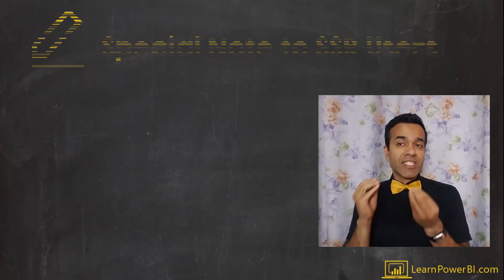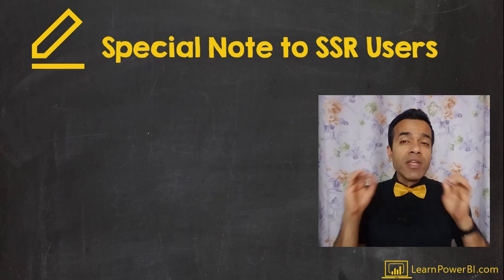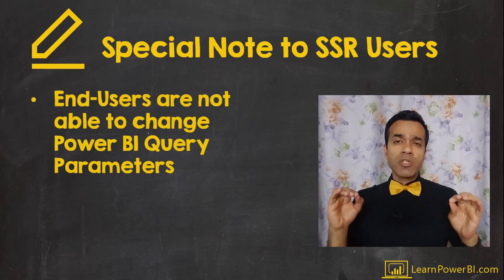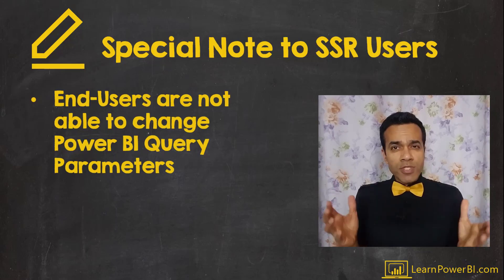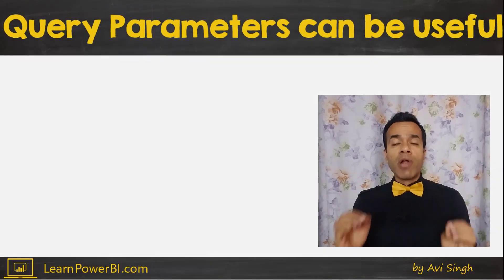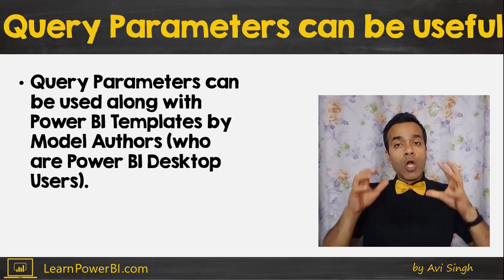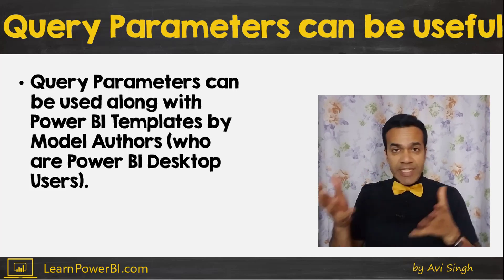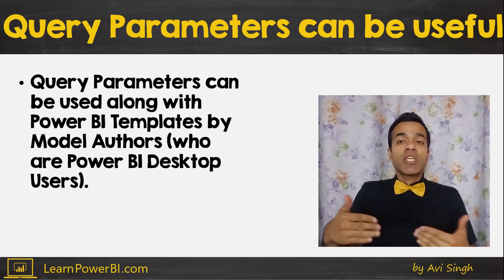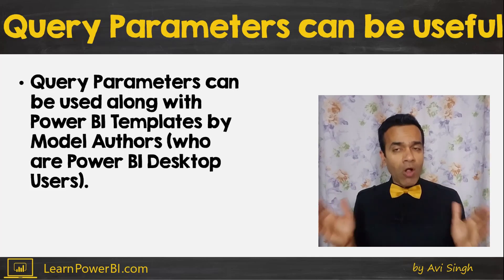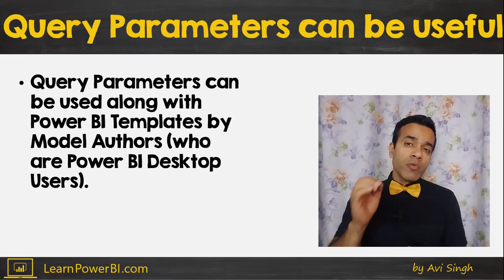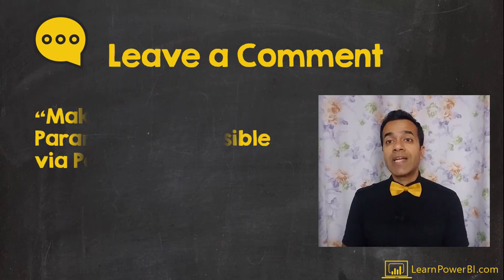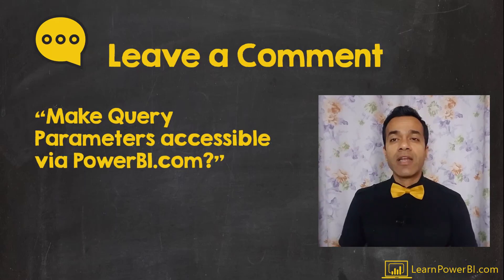Anyone used to creating SSRS reports should take particular note of this behavior because it is very different from SSRS, where end users can change parameters when consuming the web report. So if end users are not able to change Power BI query parameters, are they of any use and are there workarounds? Yes and yes. Query parameters can be used along with Power BI templates by model authors who are Power BI Desktop users — to pass along PBIX models they can reuse by simply changing the query parameters. The Power BI team is also working towards making query parameters accessible via PowerBI.com. If you would like that, let us know in the comments below.